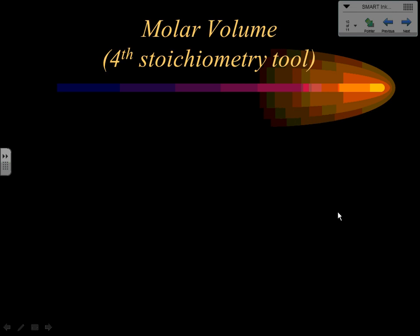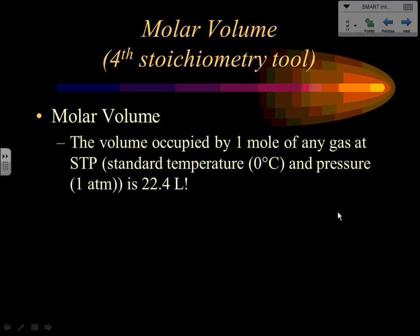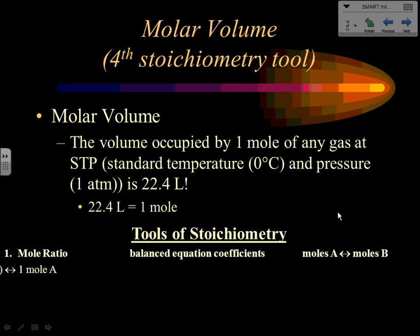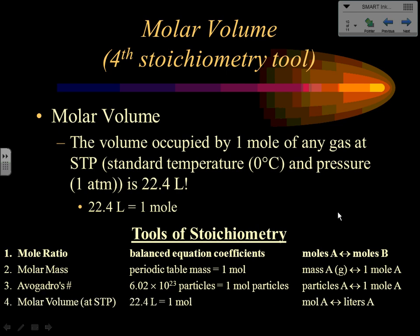There is a fourth potential tool of stoichiometry: molar volume. The volume occupied by one mole of any gas at STP (0°C and 1 atm) is 22.4 liters. So for any gas at STP, 22.4 liters equals one mole — another way to get into or out of moles. This only works for gases at STP and can be used in step one or step three of a stoichiometry problem.